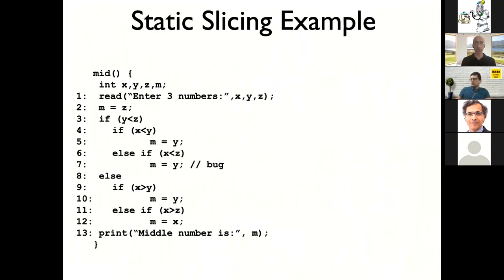Let me illustrate that with an example — I'm going to use this example for many other techniques so you don't have to see too many pieces of code. It's a very simple piece of code: a function that takes three integers, reads them, and prints the middle one in terms of value. It performs some computation and then prints the result. You can see there's a bug at line seven, where line seven is identical to line five, but that should not be the case — probably a copy-and-paste error.